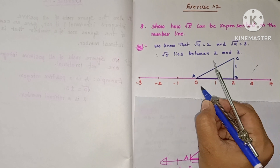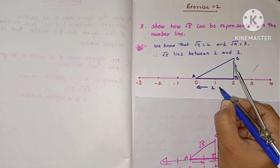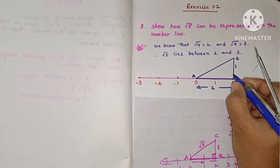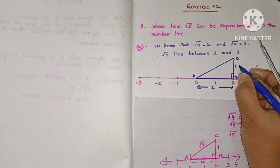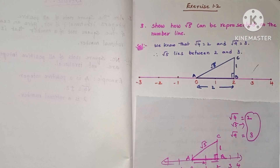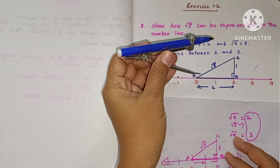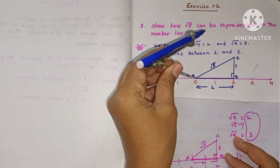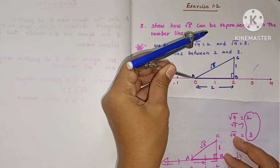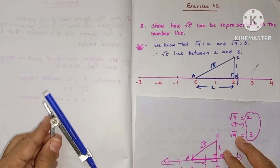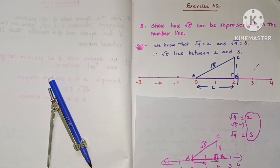AB is two units and BC is one unit. By Pythagoras theorem, CA squared equals 2 squared plus 1 squared equals 4 plus 1, so CA equals root 5. Now with the compass, measure the distance AC. With AC as radius and A as center, draw an arc on the number line.